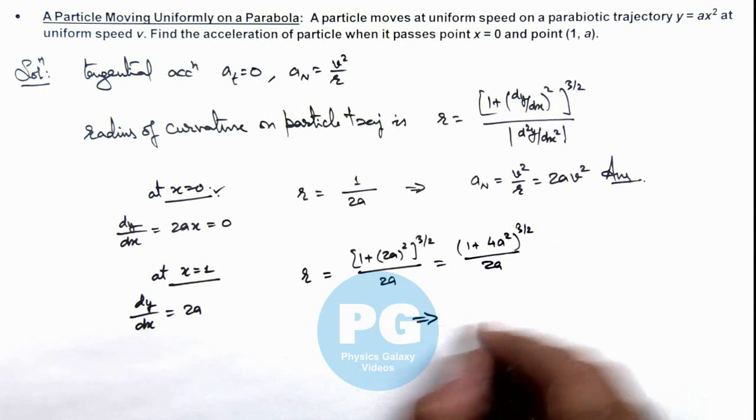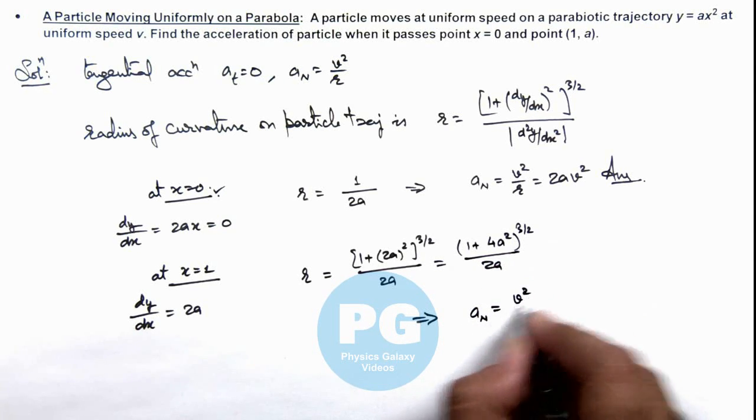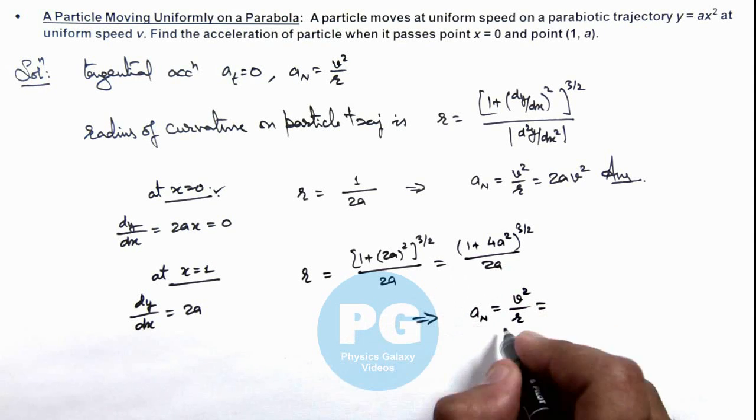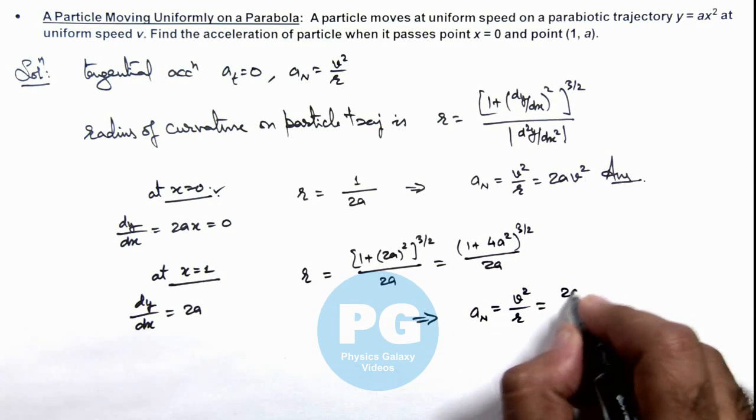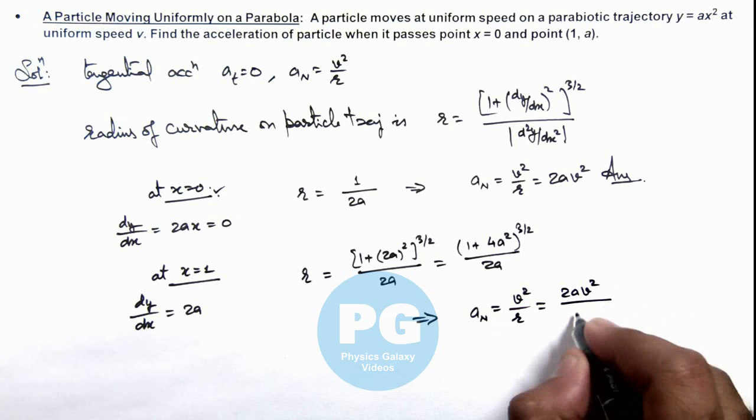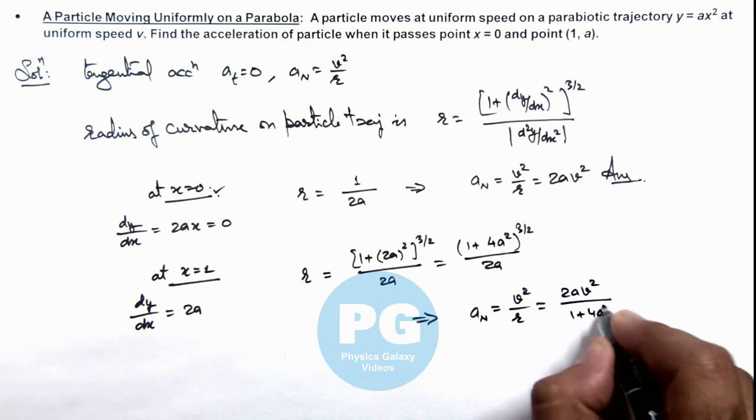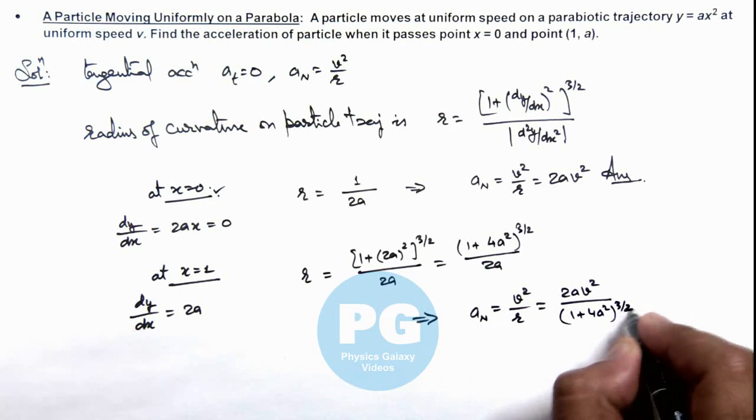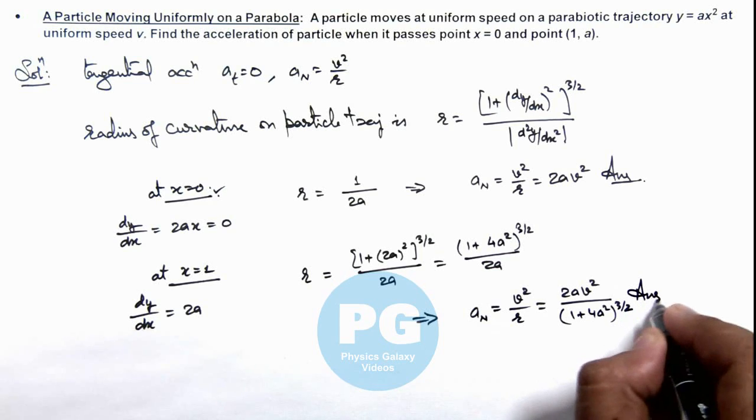This implies the normal acceleration at this point is again given as v²/r. If we substitute the value of r, this is 2av² divided by [1 + 4a²]^(3/2). That will be the final result of this problem.